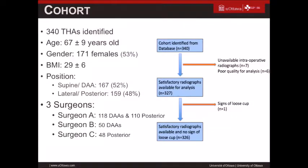We identified over 340 cases, mean age 67, with slightly more females and BMI of 29. We had an equal distribution of supine anterior approach and lateral posterior approaches. Surgeon A did both anterior supine and lateral posterior approaches. Surgeon B performed supine anterior only, and Surgeon C performed purely posterior lateral approaches.